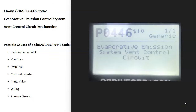Today I'm talking about a Chevy or GMC with the P0446 code — what it is and how you go about fixing it. The P0446 code is an evaporative emission control system vent control circuit malfunction.